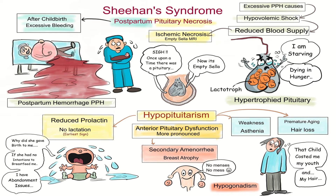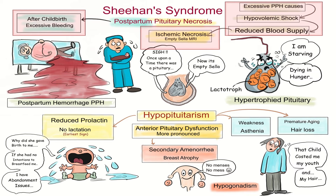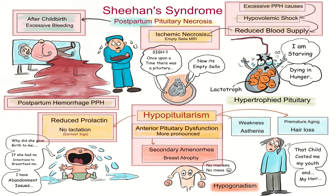This picture beautifully explains the whole scenario of Sheehan syndrome. Excessive postpartum hemorrhage causes hypovolemic shock and reduced blood supply to the anterior pituitary gland, resulting in ischemic necrosis of the anterior pituitary. This postpartum pituitary necrosis leads to hypopituitarism and anterior pituitary dysfunction, which is more pronounced. Secondary amenorrhea is one of its features along with breast atrophy.